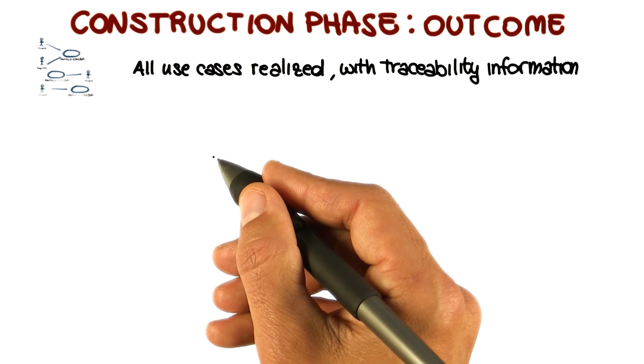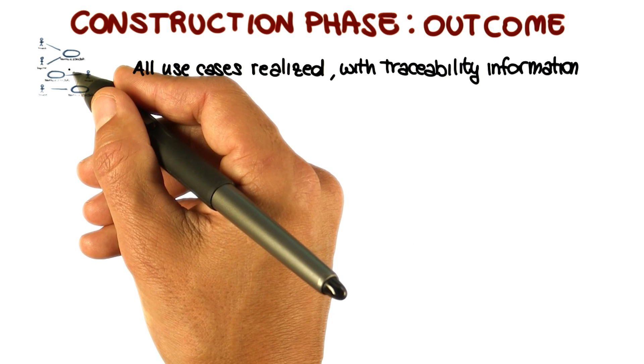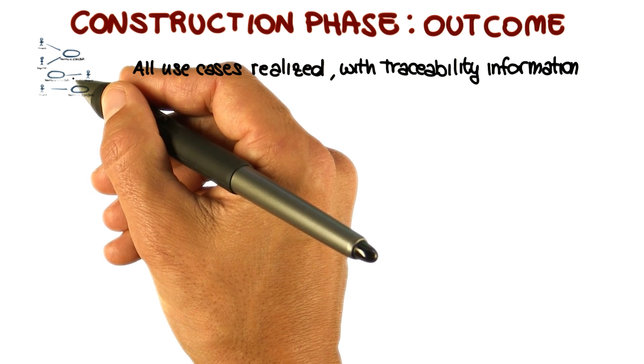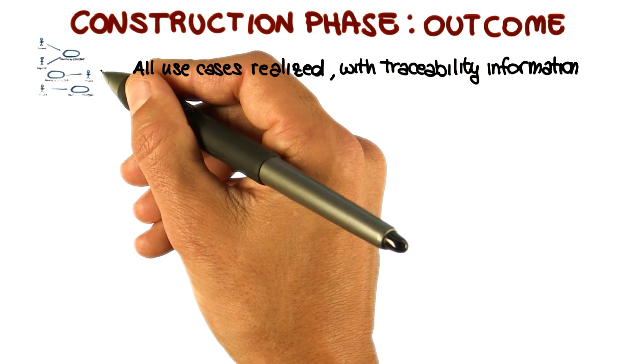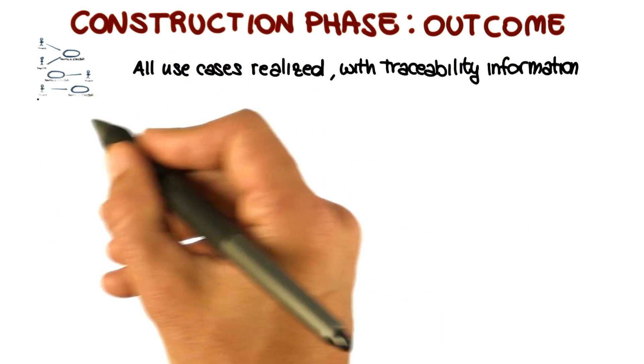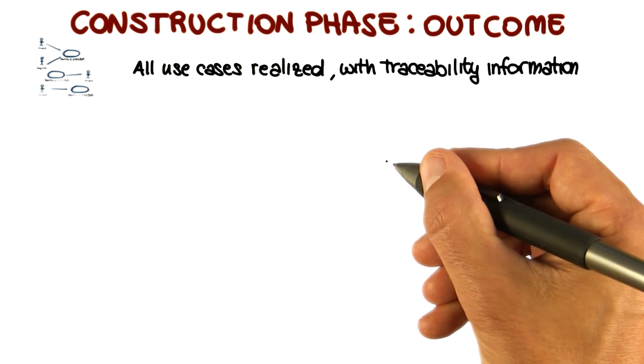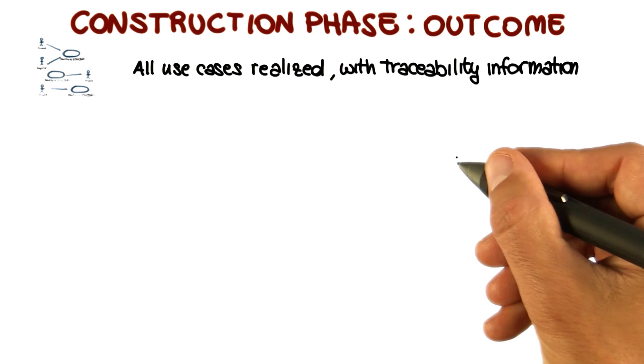For example, we know which part of the design realizes which use case. We know which part of the implementation is related to a given use case, which test cases were derived from a use case, and so on. In this way, we can trace our requirements throughout the system, throughout the different artifacts that were developed during the software process.